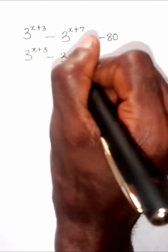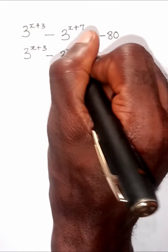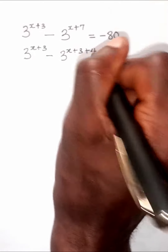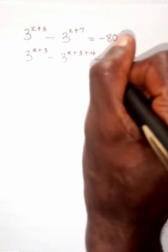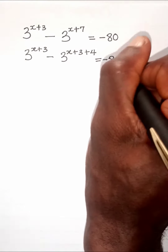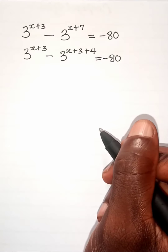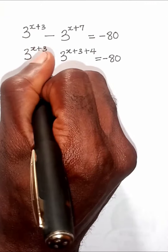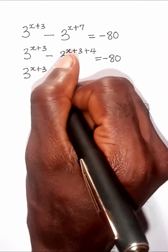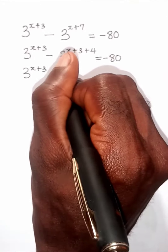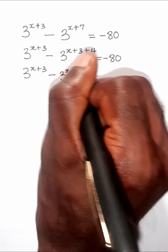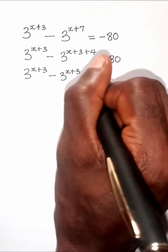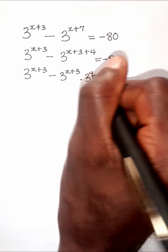So 3 raised to the power of x plus 7 will be rewritten in such a way that we can get 3 raised to the power of x plus 3, then plus 4. This becomes 3 raised to the power of x plus 3, minus 3 raised to the power of x plus 3 times 3 raised to the power of 4.